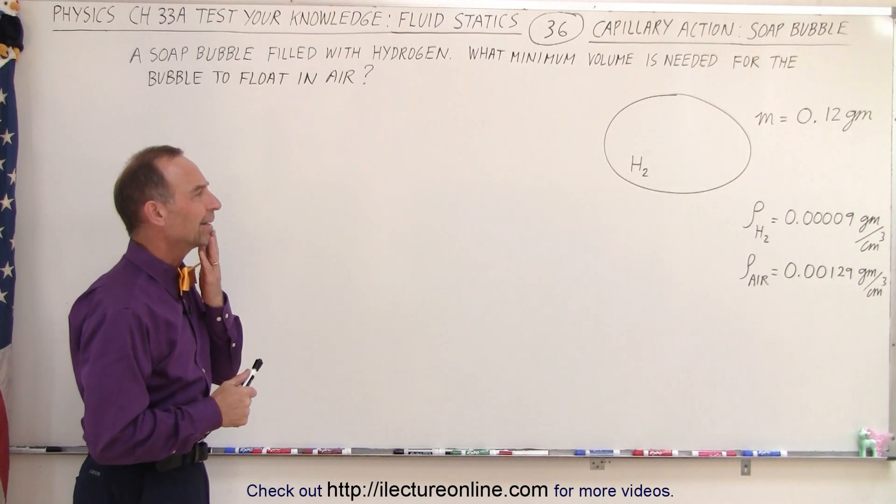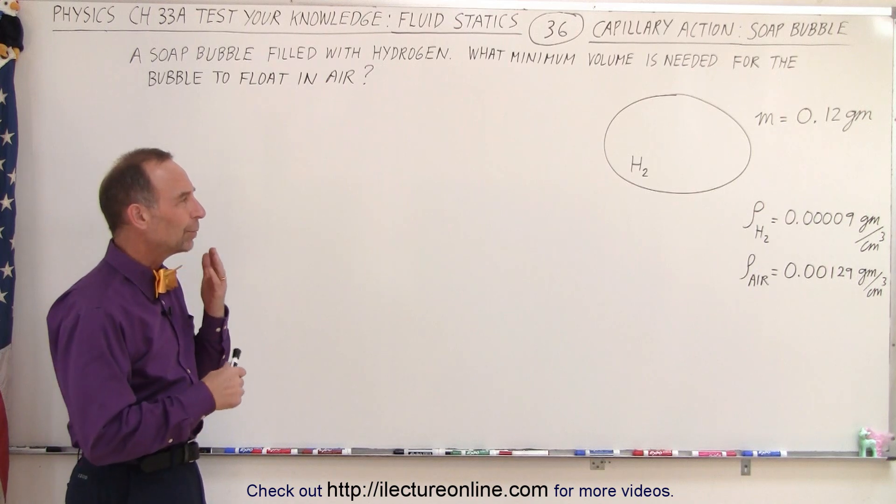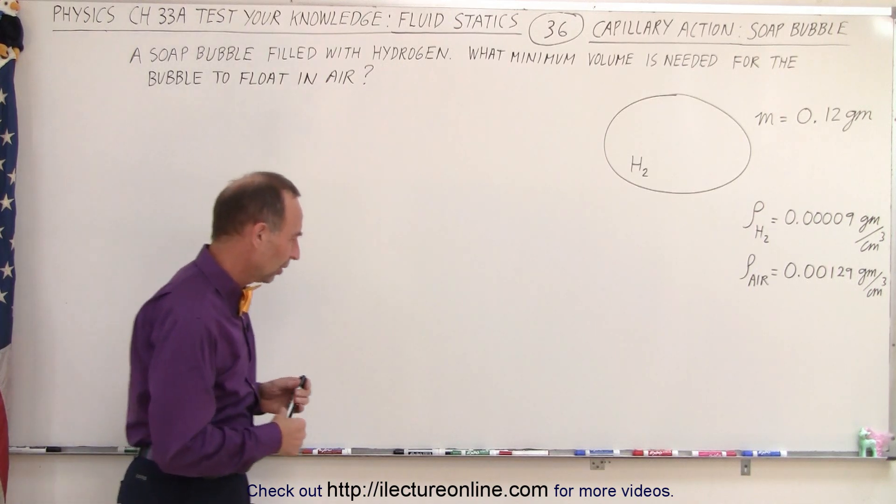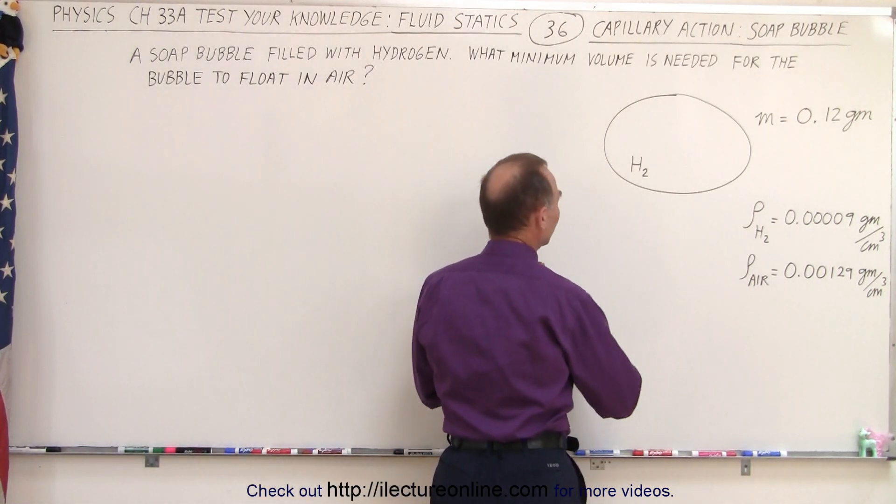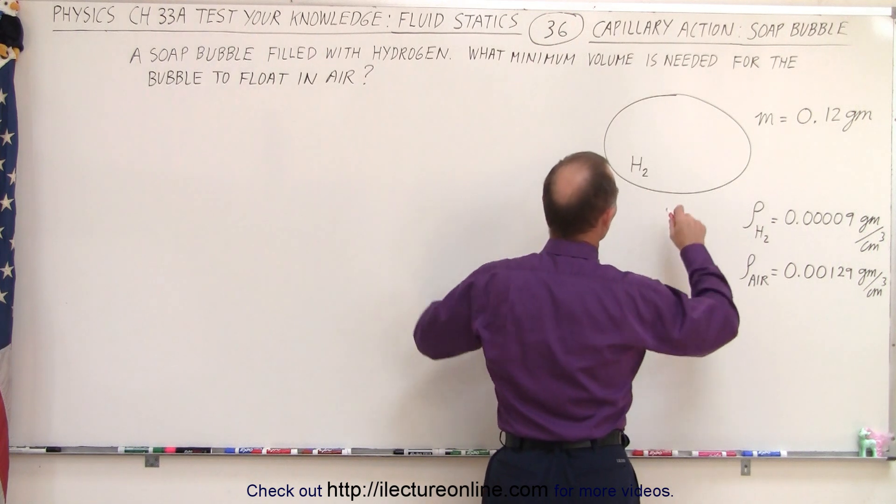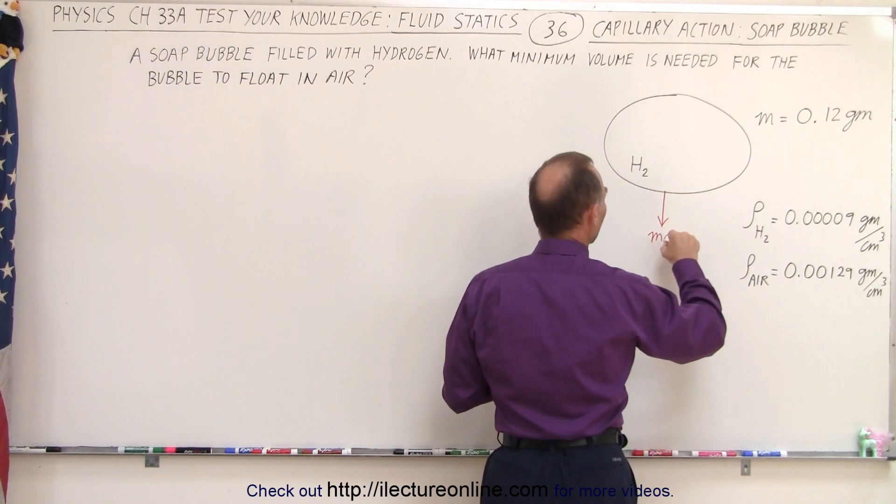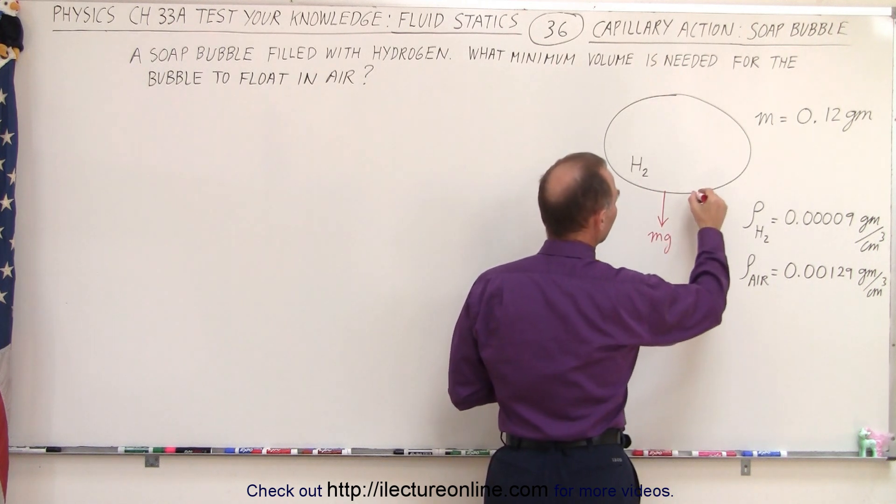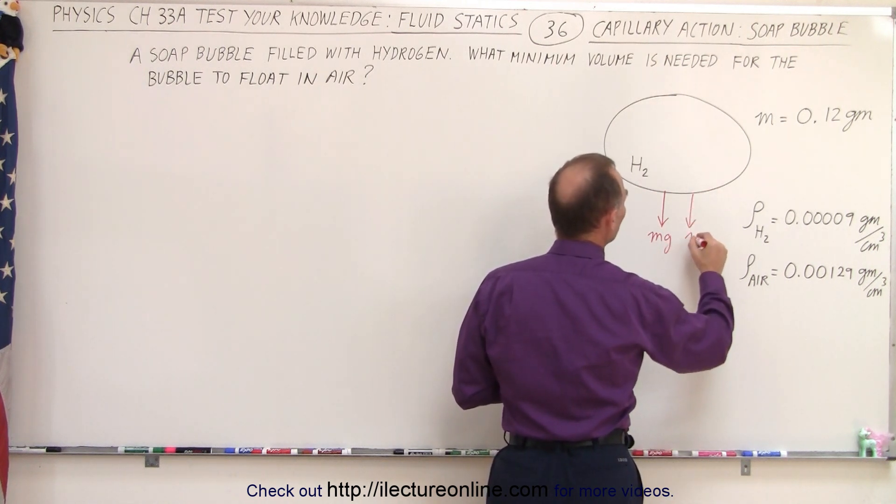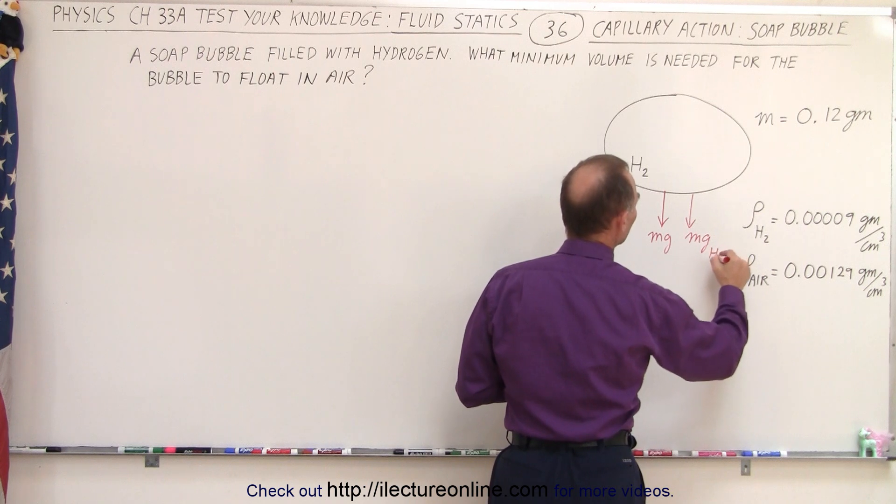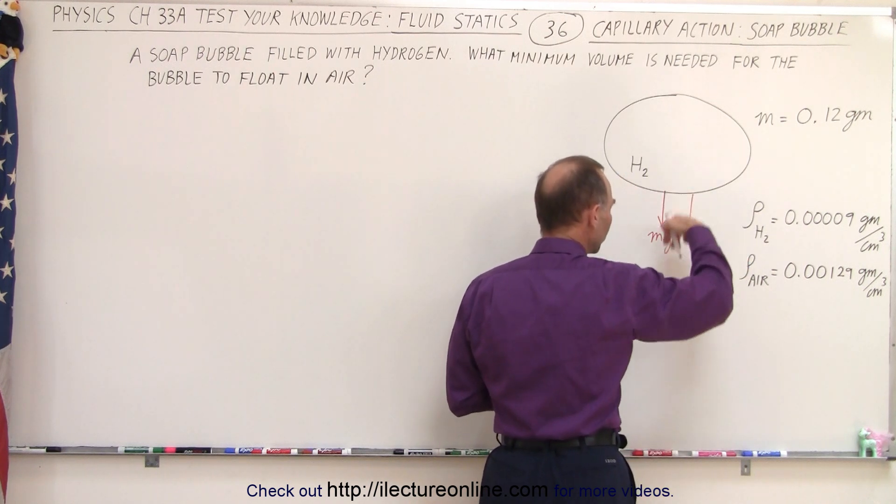Let's see here. How do we figure that out? Well, we need to think of all the forces. Obviously we have a force pulling down on it. So we can say that the weight of the soap bubble itself and then the mg of the hydrogen, both of those will be pulling downward.